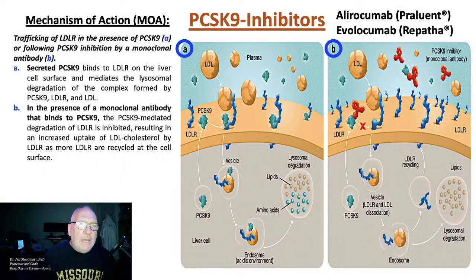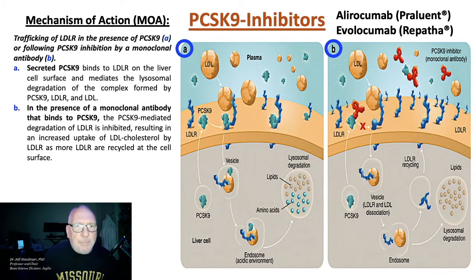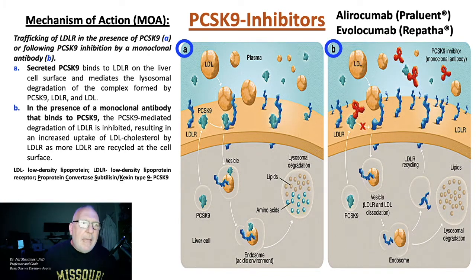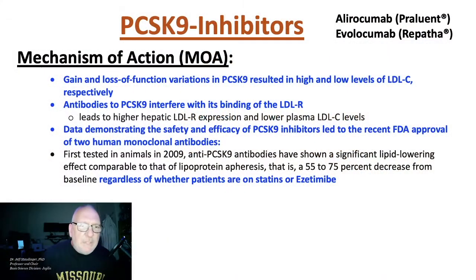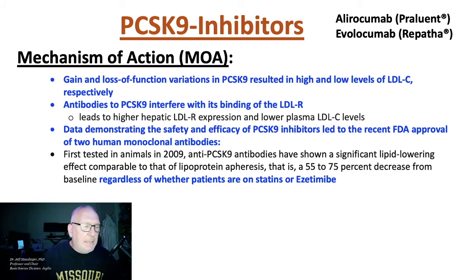Because the LDL receptor is no longer being degraded, you get a large number of LDL receptors on the surface of the liver cell, which removes cholesterol more effectively when you inhibit PCSK9 serine protease activity with this inhibitory monoclonal antibody. From a genetic perspective, individuals with a gain-of-function or loss-of-function allele encoding PCSK9 show high and low levels of LDL cholesterol respectively. These antibodies interfere with PCSK9's ability to bind the LDL receptor, leading to higher LDL receptor expression and lower plasma LDL cholesterol levels.